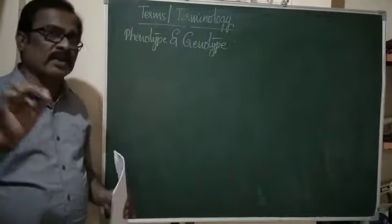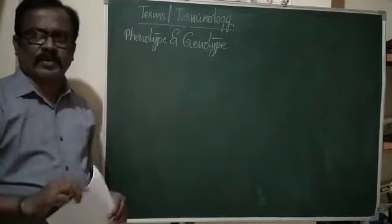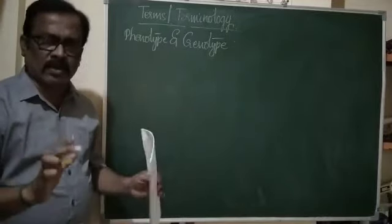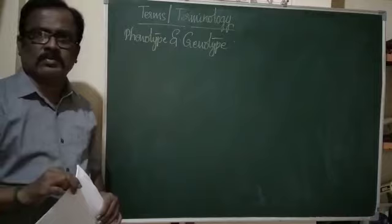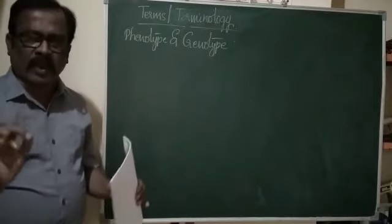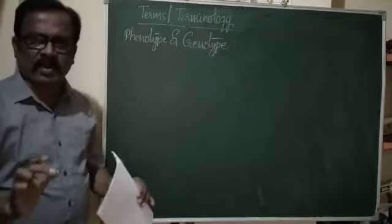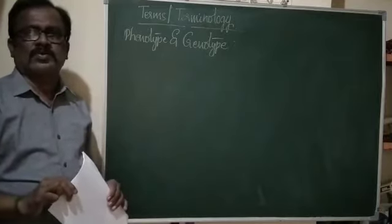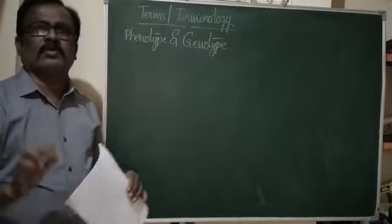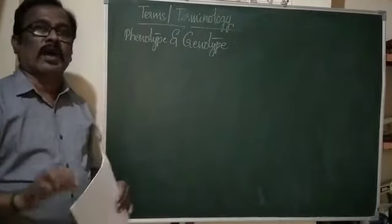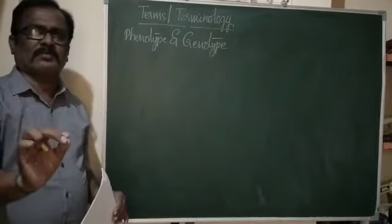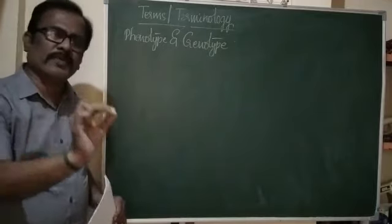Phenotype means the group of externally expressed characters. Just by observing — tall, short, medium, curly hair, straight hair, black, brown, cat eyes, normal, white, albino — all these characters observed externally are called phenotype. The group of externally expressed characters is called phenotype.